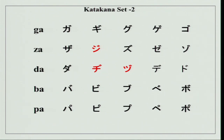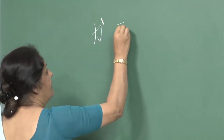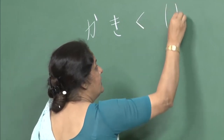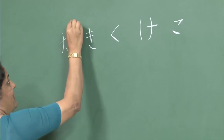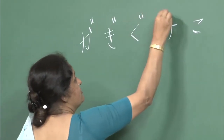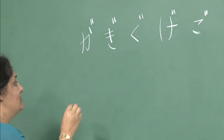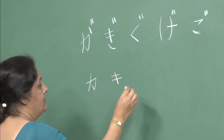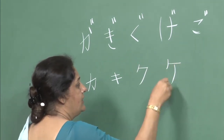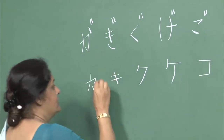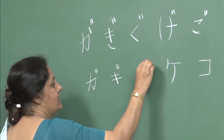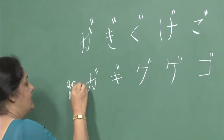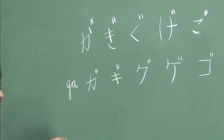For example, in hiragana it was ka, ki, ku, ke, and ko. Just by putting this symbol here, we changed it to ga, gi, gu, ge, and go. So in a similar manner, in katakana as well — ka, ki, ku, ke, and ko. Just by putting this symbol here, we make it ga, gi, gu, ge, and go. The same thing can be done for za, da, ba, and pa.